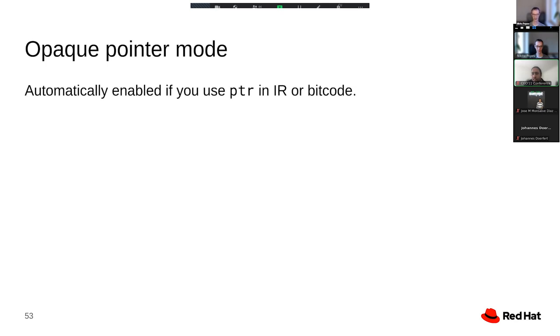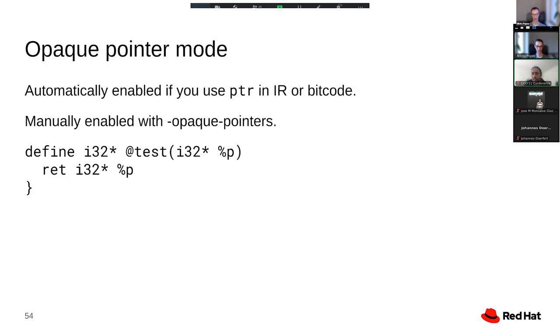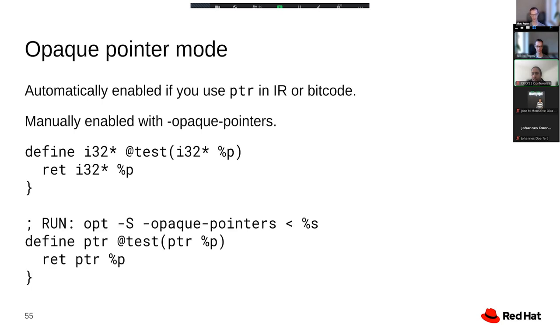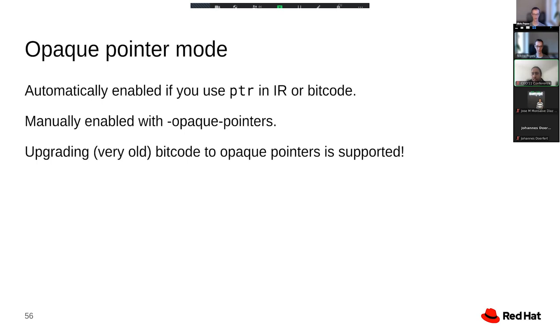In addition to that, there is a flag to explicitly enable opaque pointers. And what this flag does, or what it is primarily useful for, is to take existing typed pointer IR and convert it automatically to opaque pointers. This is very handy to run existing tests in opaque pointer mode. And this also works with old bitcode. Old typed pointer bitcode can also be upgraded to opaque pointers, which has been one of the larger engineering challenges of the migration, but it also works well now.